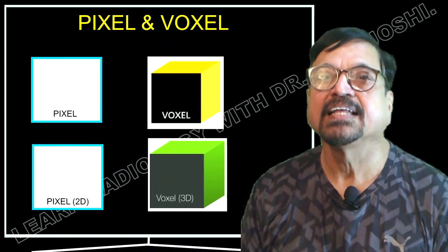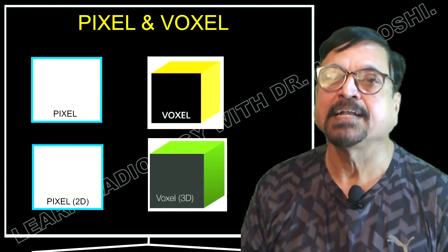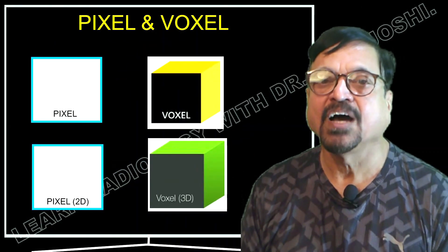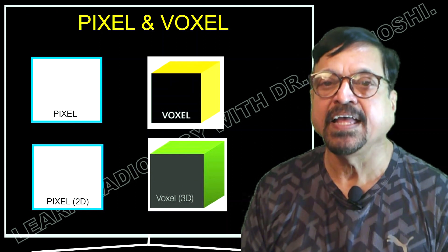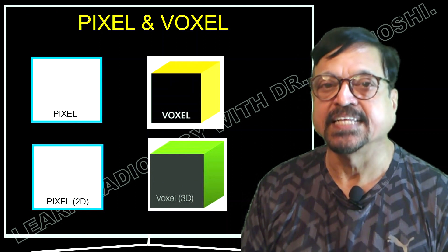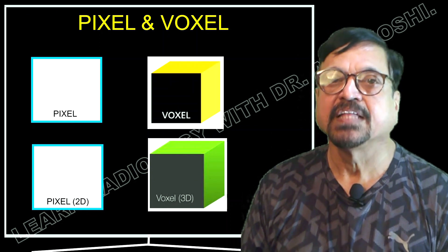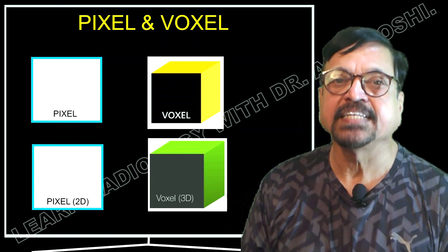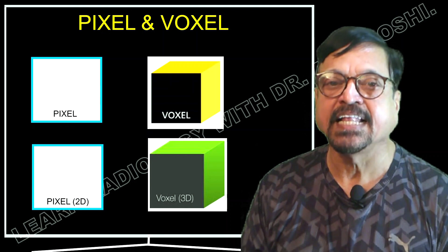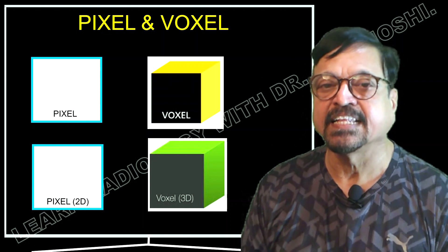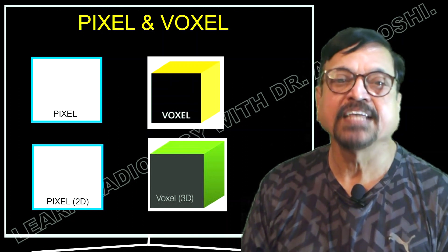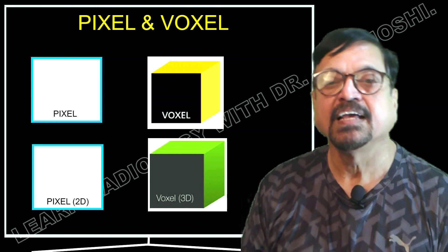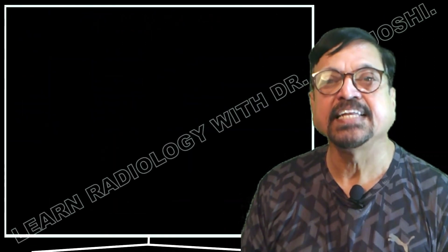Here is a diagrammatic presentation of how a pixel is and how a voxel is. The first image shows a single pixel, then the voxel presentation. Pixel is 2D, voxel is 3D. This is a diagrammatic representation of the same.